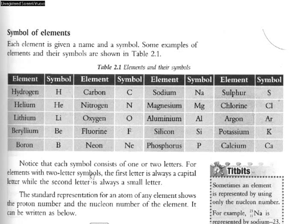Now how are symbols obtained? Notice that each symbol consists of one or two letters. For elements with two-letter symbols, the first letter is always capital while the second letter is always a small letter.